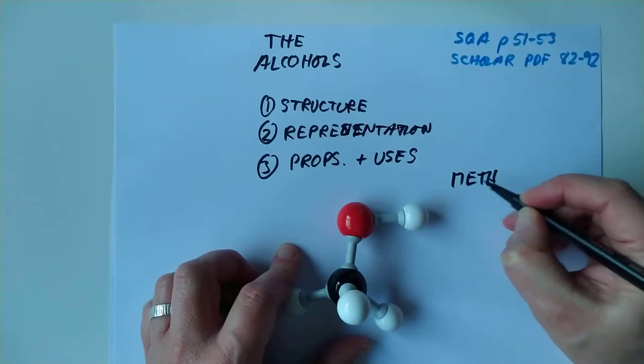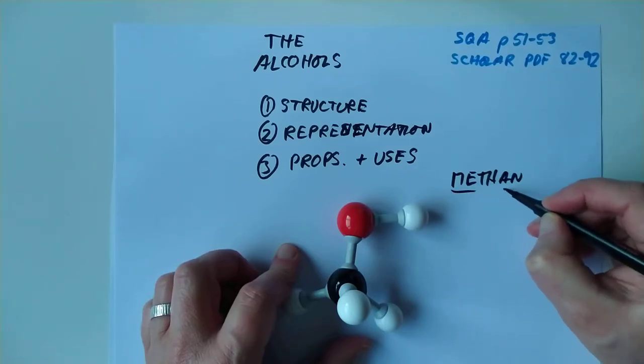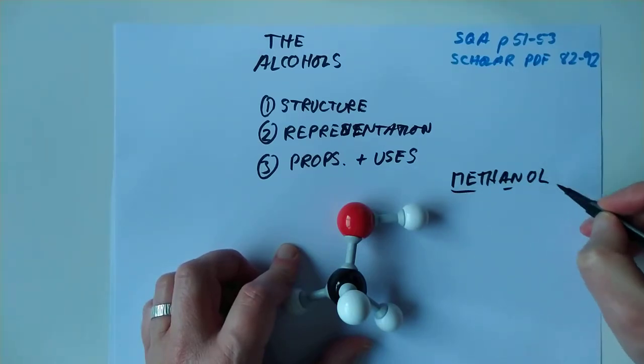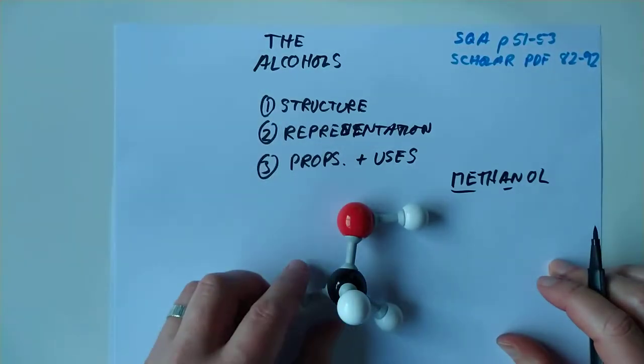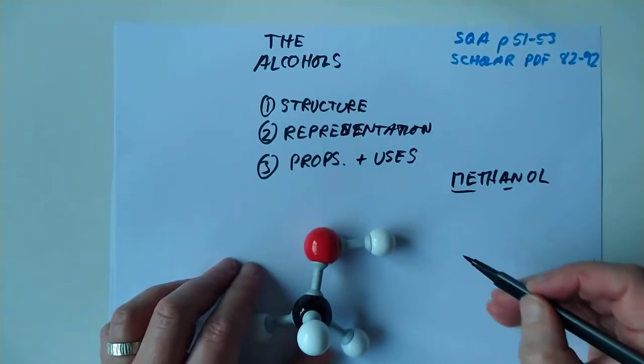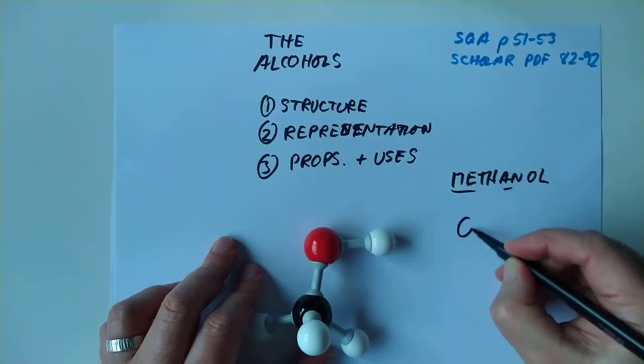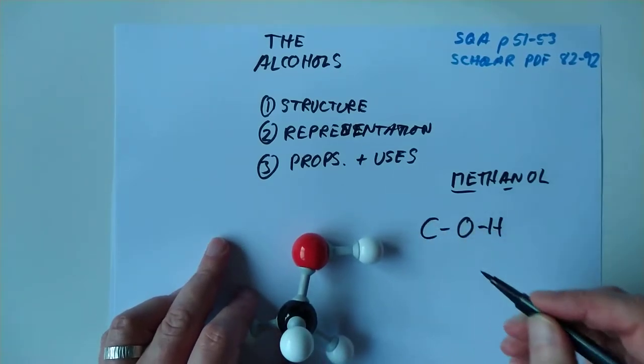It's called meth because it's only got one carbon. It's called an because there's only single bonds. And it's ol because it's a member of this alcohol family. How do you recognize them? Because they have got this O and an H attached to a carbon.